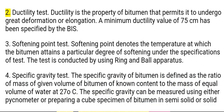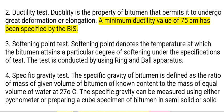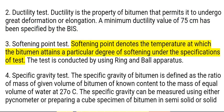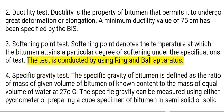2. Ductility test. Ductility is the property of bitumen that permits it to undergo great deformation or elongation. A minimum ductility value of 75 cm has been specified by the BIS. 3. Softening point test. Softening point denotes the temperature at which the bitumen attains a particular degree of softening under the specifications of the test. The test is conducted using ring and ball apparatus.